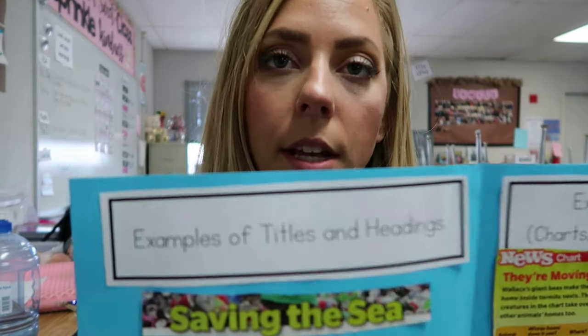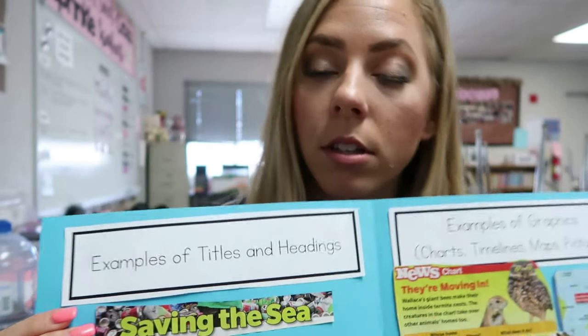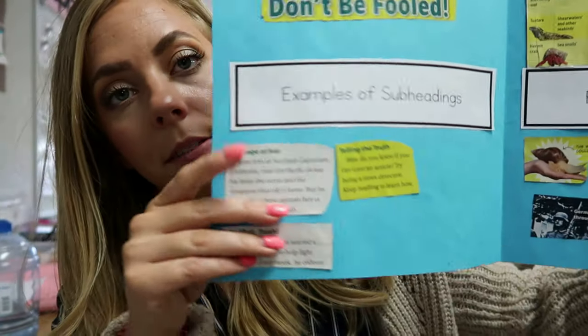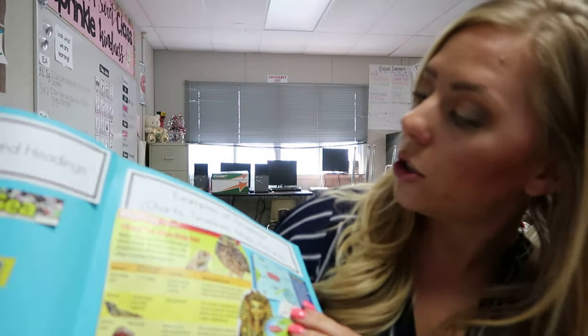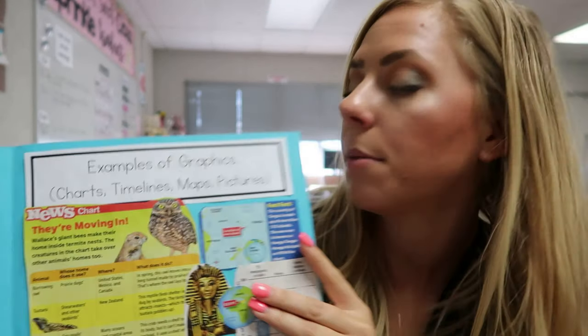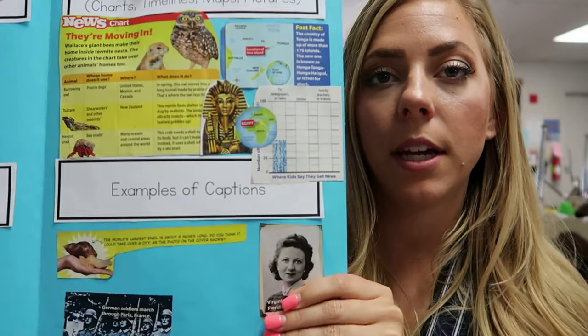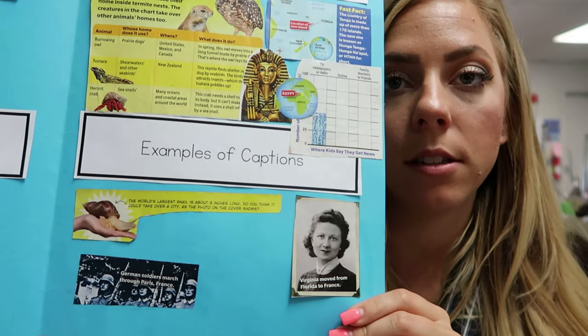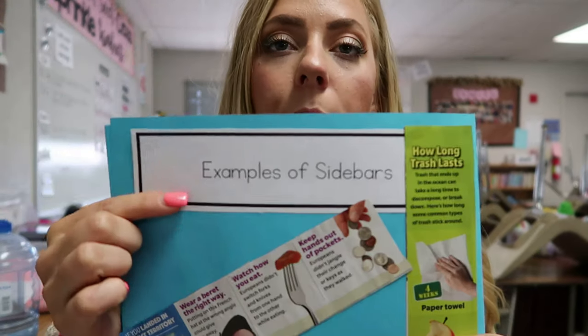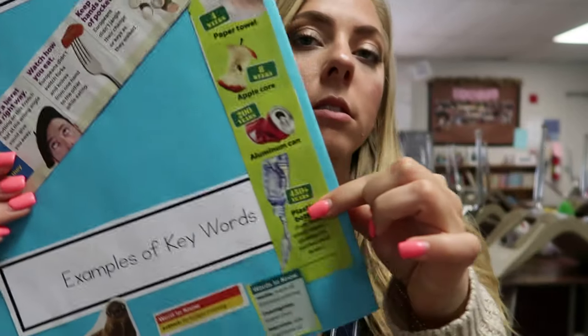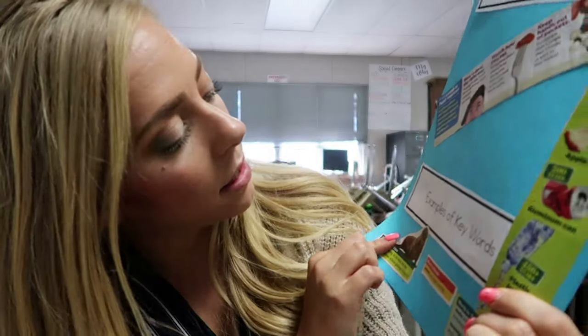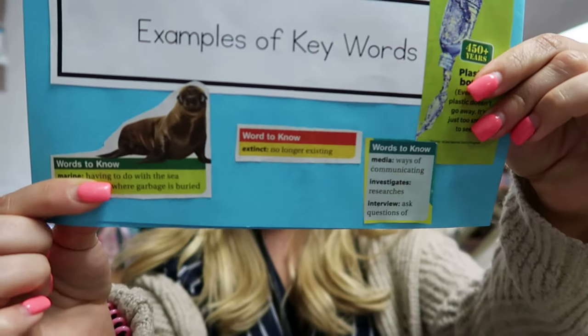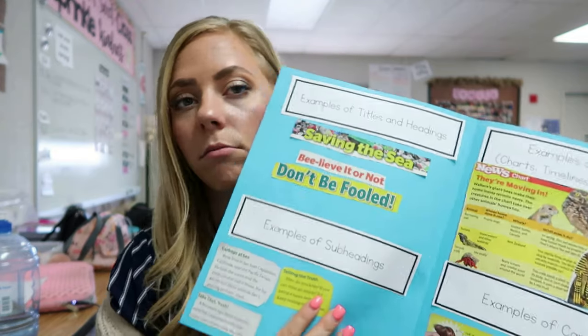On the inside it says examples of titles and headings — they glue right in there. Then we have examples of subheadings, then examples of graphics which are charts, timelines, maps, and pictures. We get into examples of captions, and on the back we get into examples of sidebars. And lastly, examples of keywords. Through the PowerPoint presentation we really talk about why each one of these are important — each subgroup — why it's important and why they're helpful.